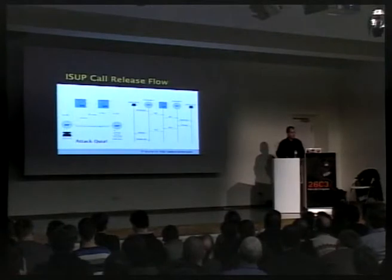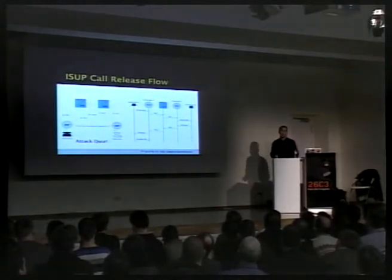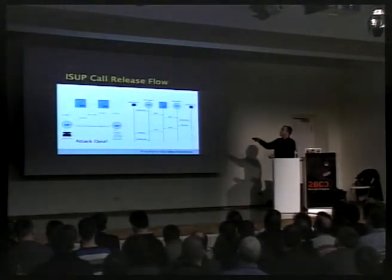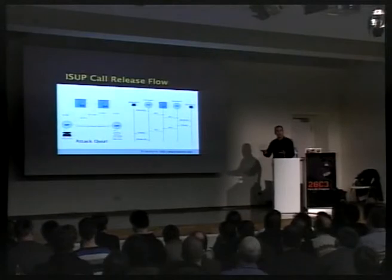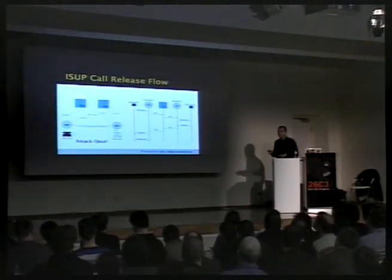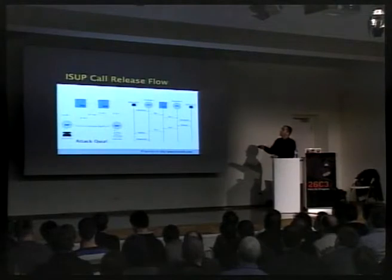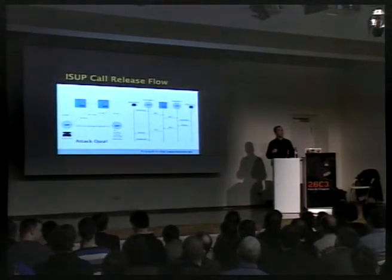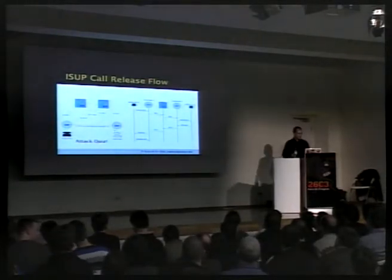Then the release flow: if I hang up, what we get is a release message — a disconnect — then the two switches close the voice trunk, and you get a clean release of the call. A CDR is generated to determine how much to charge the calling user.